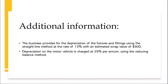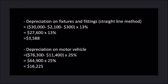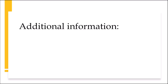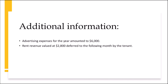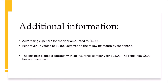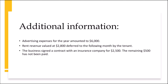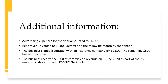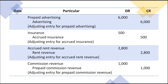I then proceeded to make adjustments for the depreciation of non-current assets. These were the calculations under the straight-line method and the reducing balance method. After this, I made adjustments to accrued and prepaid expenses, as well as income. They were all recorded in the General Journal as shown.